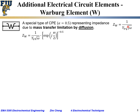We need 1 over the square root of j, which is j raised to the power of −0.5. Using Euler's formula, j equals e^(j·π/2). Combining the −0.5 exponent, the pre-exponential term remains 1 over Y₀ times square root of ω, and the exponent becomes −j times π/4.